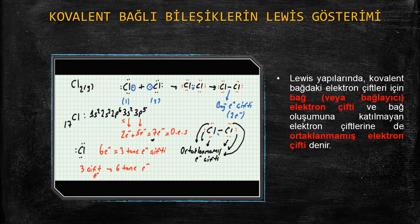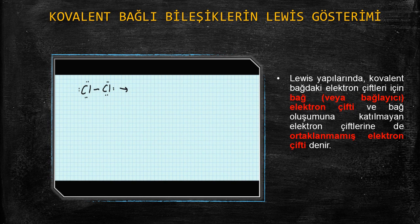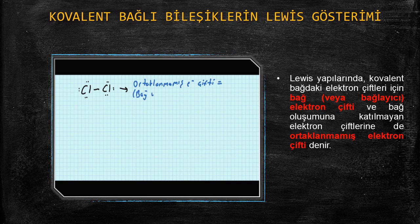Şurada siyah çizgi ile gösterilen elektronlar bağ elektronlarıdır. Şimdi bir klor atomu için konuştuk. Cl₂ molekülü için bağ elektron çiftini ve ortaklanmamış elektron çiftlerini belirleyelim. Ortaklanmamış demek, diğer bir ifadeyle bağ yapmamış, bağa katılmamış anlamına da gelir. Bağ elektron çifti de vardı. Bunların farkına dikkat etmek gerekir.